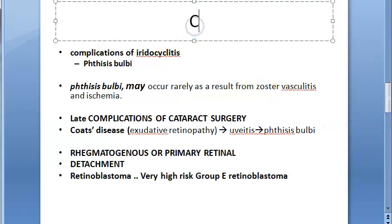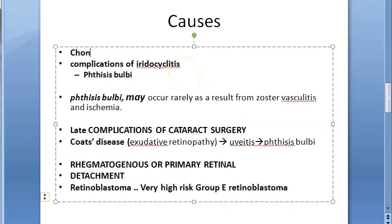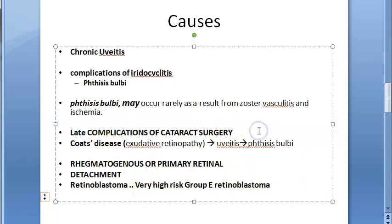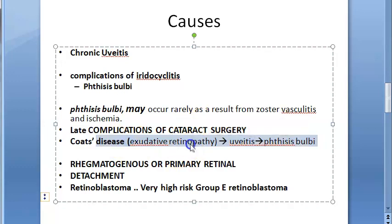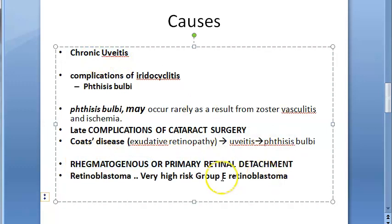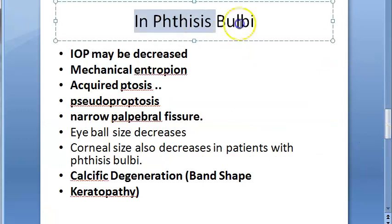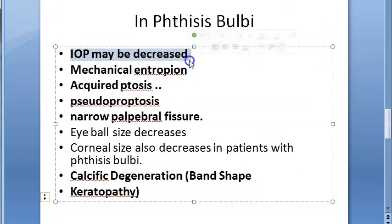The causes of phthisis bulbi include chronic uveitis. It can be a complication of iridocyclitis and can also occur due to herpes zoster and ischemia. It can be a late complication of cataract surgery. Coats disease, which involves exudative retinopathy, can lead to uveitis and then phthisis bulbi. Rhegmatogenous or primary retinal detachment and retinoblastoma — specifically high-risk group E retinoblastoma — can also lead to phthisis bulbi.